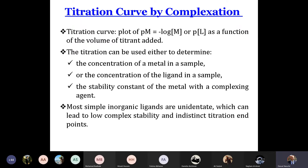We pass now to the titration curve by complexation. What is the meaning of titration? Titration is the use of a solution of known concentration to calculate the concentration of an unknown solution. In the acid-base case, we have acid HA of unknown concentration. We add OH minus of known concentration, and according to the quantity of OH minus added, we can deduce the quantity of HA present and therefore the concentration of this acid.